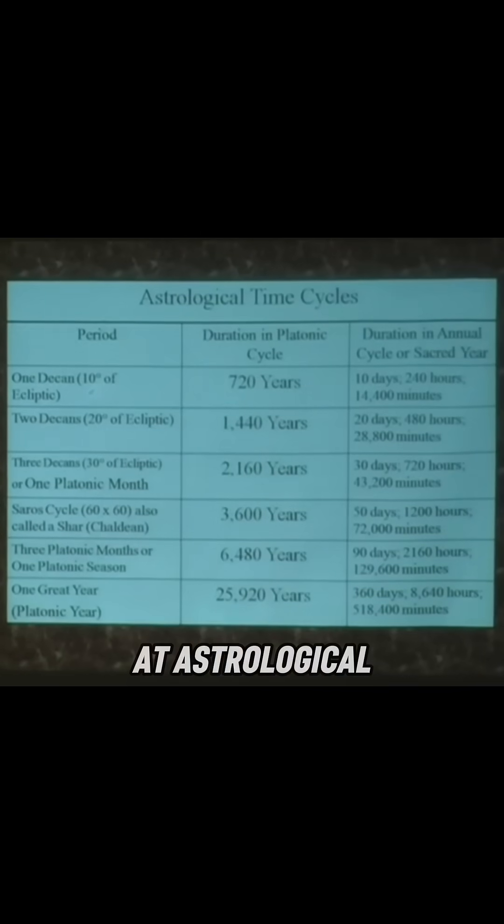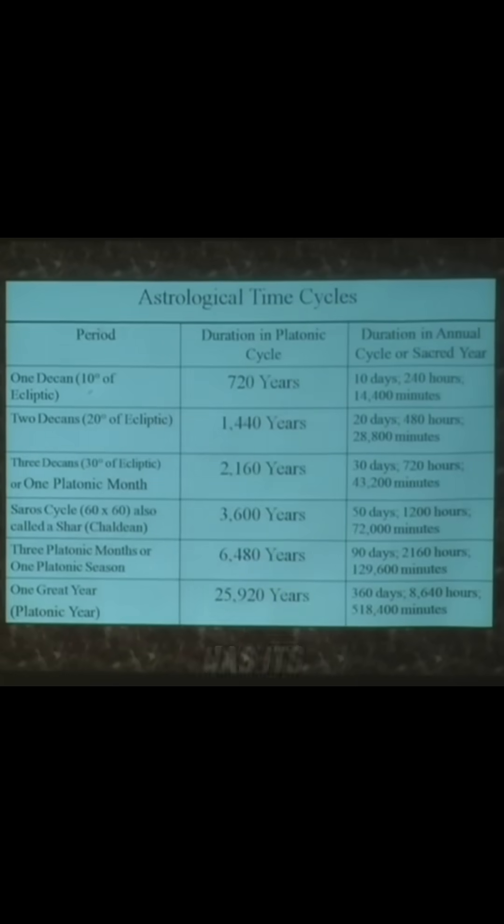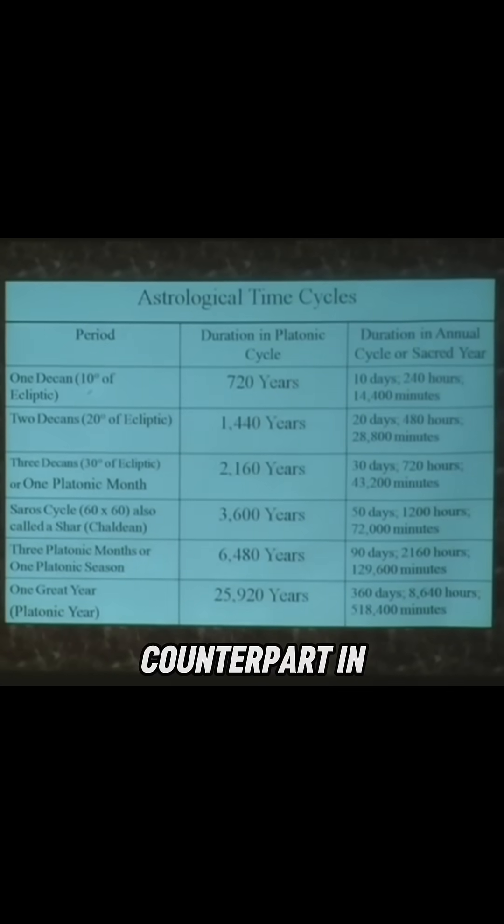And then we look at astrological time cycles and we discover that every one of those numbers has its correlate counterpart in the measure of sacred time. Over here, we have a whole set of these sacred numbers: 144, 288, 43,200.